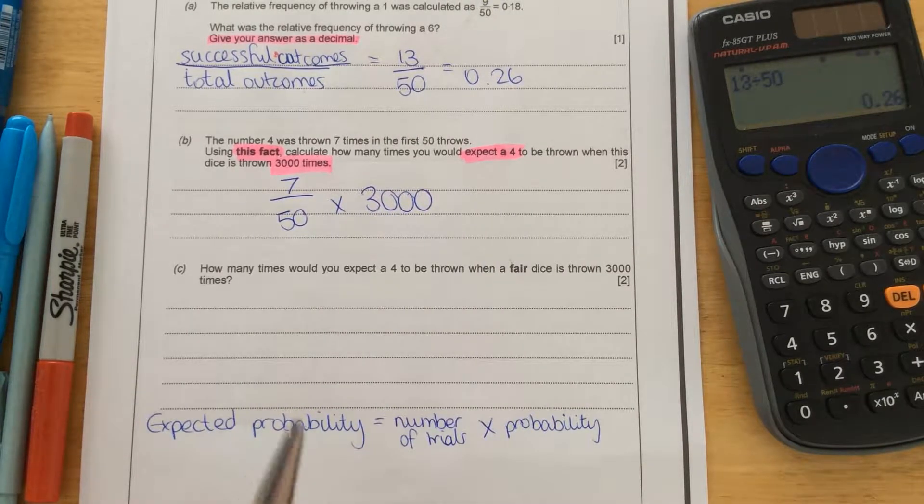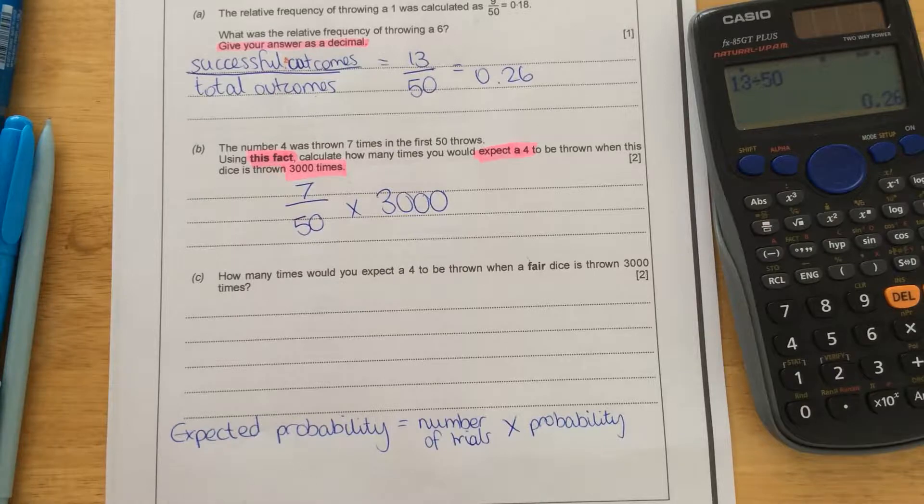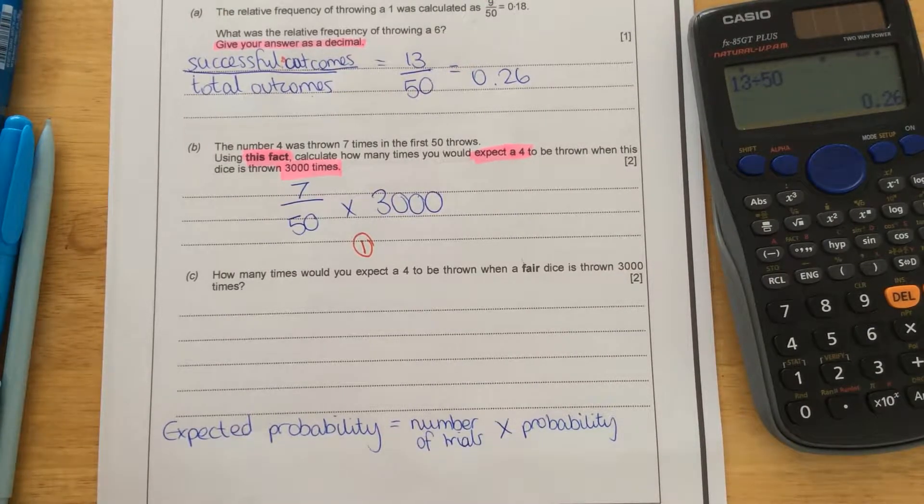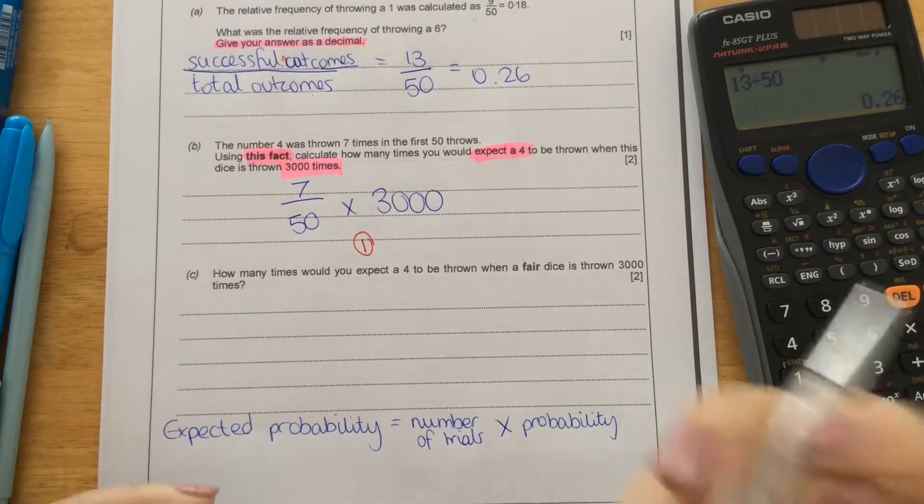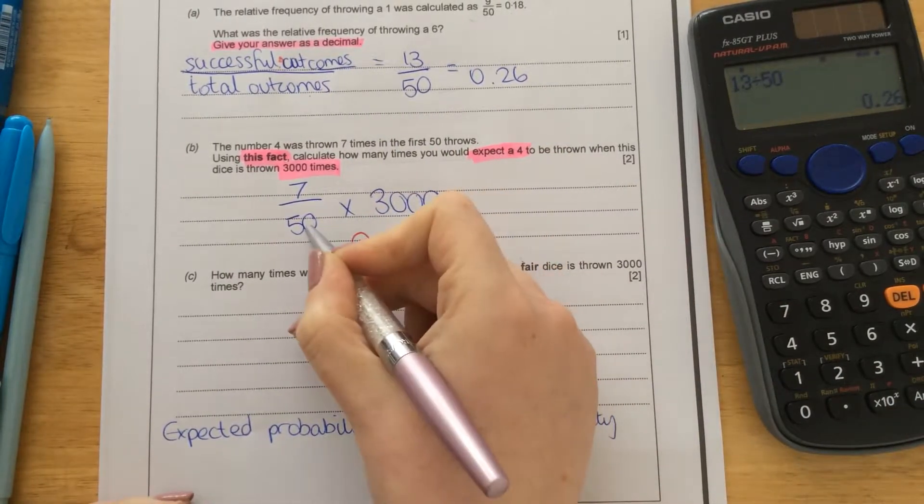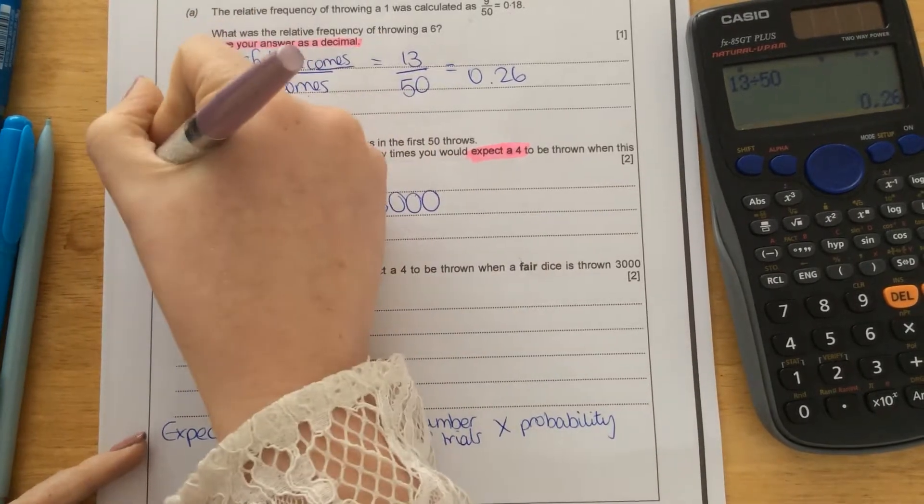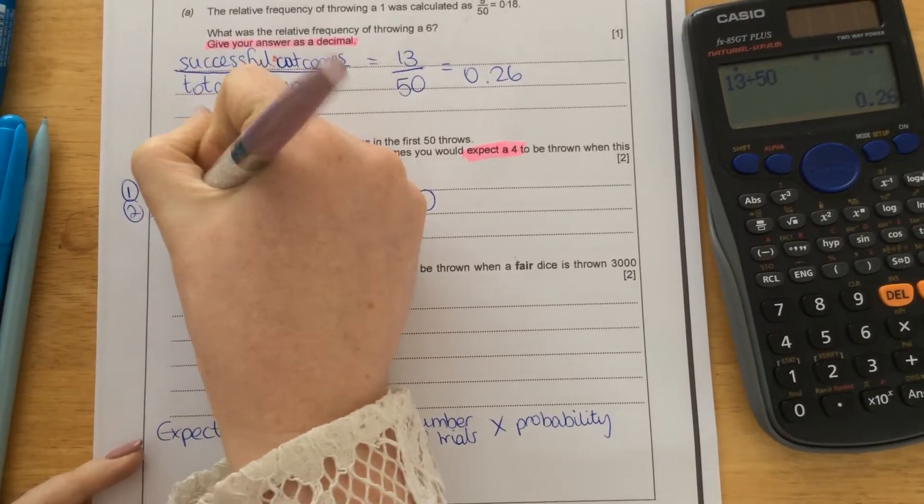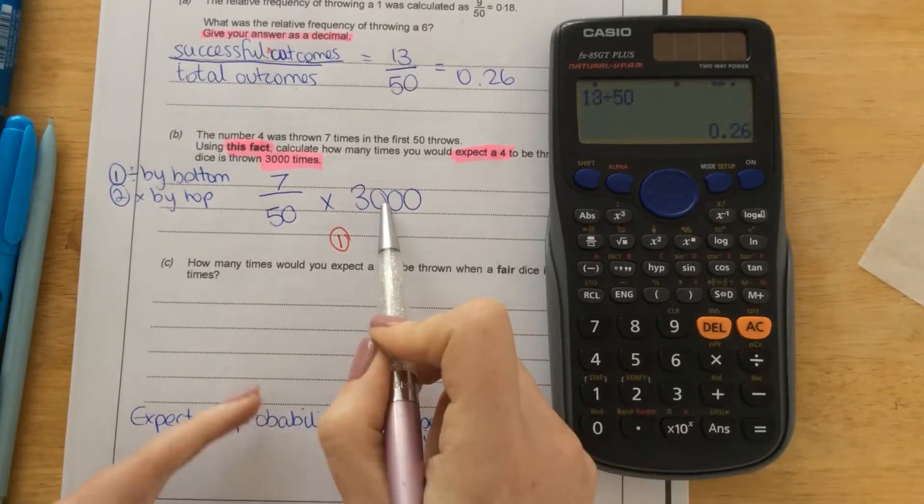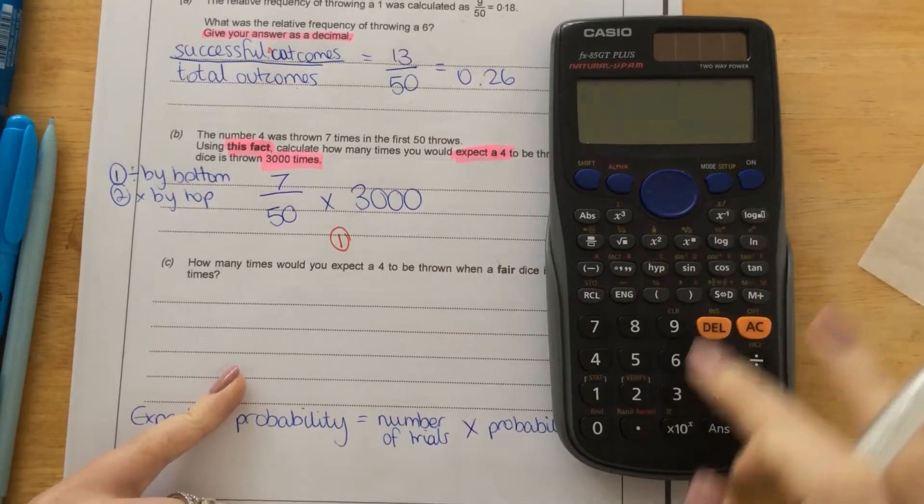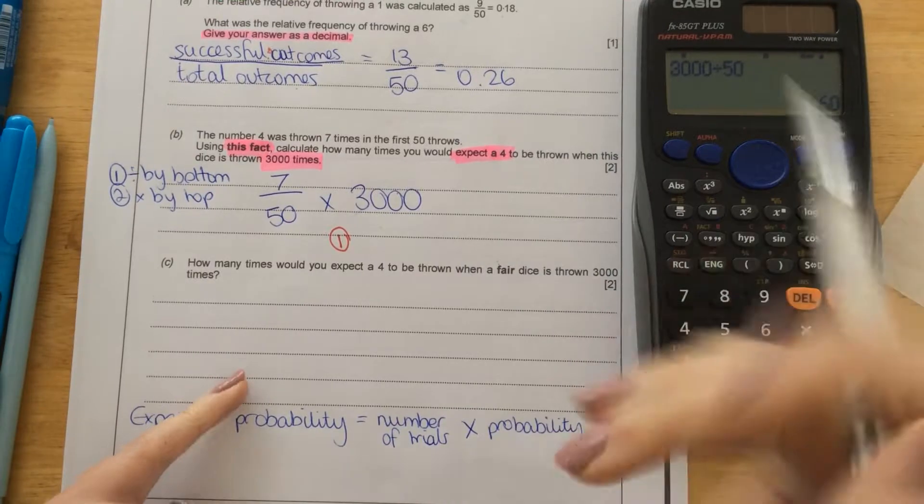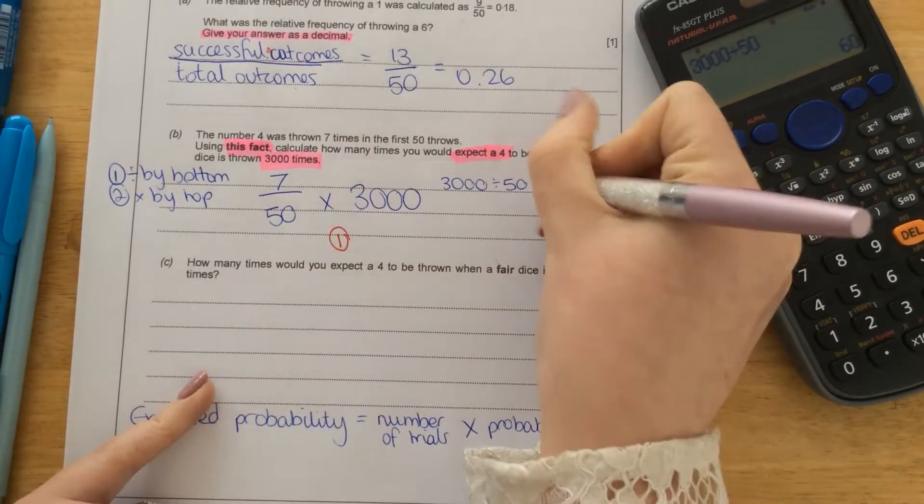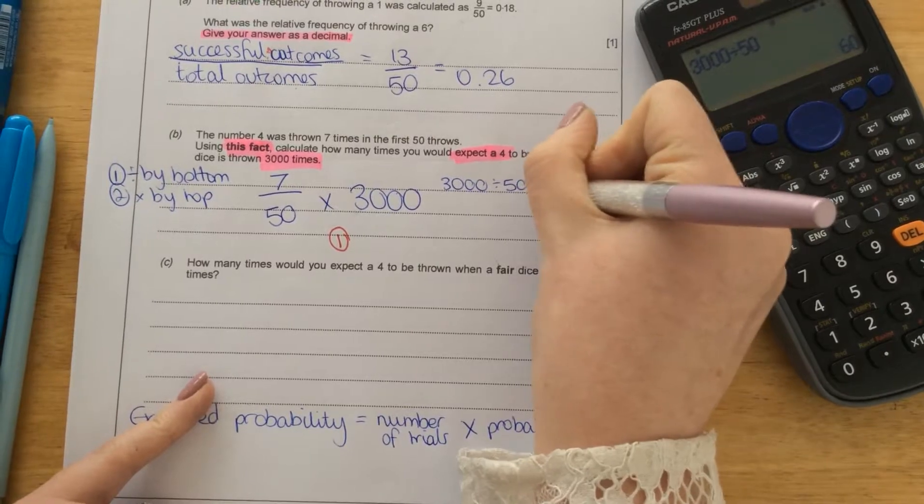So if you have that sum written down, even if you had the final answer incorrect, the examiner would give you one mark, because you've shown them that you know how to calculate expected probability. So how would we do this now? If it was a non-calculator, we'd use step 1 divided by the bottom, and step 2 times by the top. So we could say 3,000 divided by 50 equals 60. So this is step 1 now. 3,000 divided by 50 equals 60.